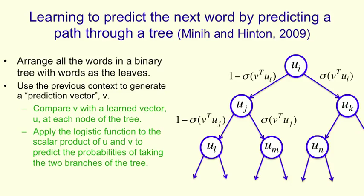So the tree looks like this. If sigma is the logistic function, you can see at the top of the tree that we take the logistic of the prediction vector times the vector that we've learned UI at the top node, and that tells us the probability of taking the right branch. Conversely, we take the left branch with one minus that probability, and so on, all the way down the tree to the word we want.